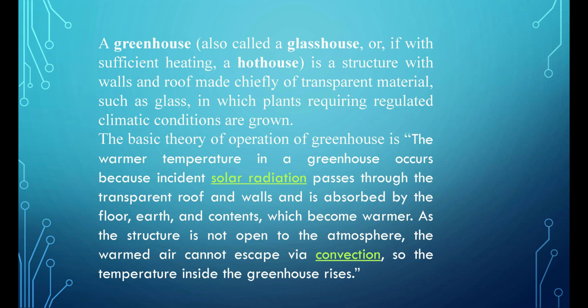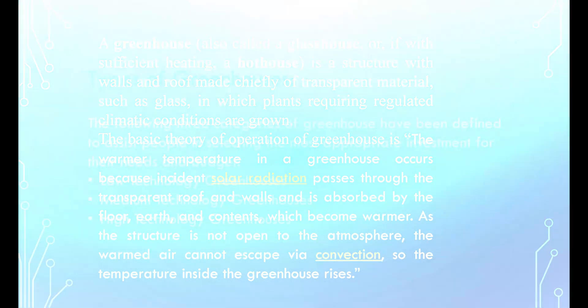The basic theory of operation of a greenhouse is that the warmer temperature occurs because incident solar radiation passes through the transparent roof and walls and is absorbed by the floor, earth, and contents, which become warmer. As the structure is not open to the atmosphere, the warmed air cannot escape via convection, so the temperature inside the greenhouse rises.